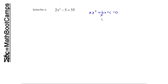So instead, anytime I just have an x squared — and this is really what I look for — if I have just an x squared, I go ahead and solve for that because it's just one term to worry about. So I'm going to say this is 2x squared equals, and I add 5 to both sides, 40. Then I divide by 2 on both sides, so I have x squared equals 20.